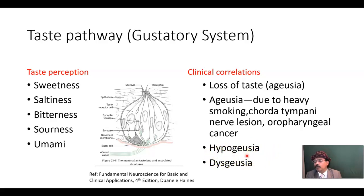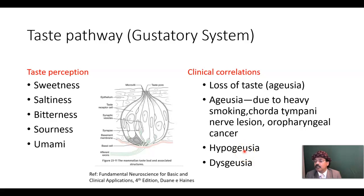We may also have hypergeusia, which is associated with cystic fibrosis. In cystic fibrosis, saliva is very thick, so these individuals may have more sense of taste than other people. Dysgeusia is an altered type of taste sensation, which may be caused by the adverse effect of drugs or substance abuse.